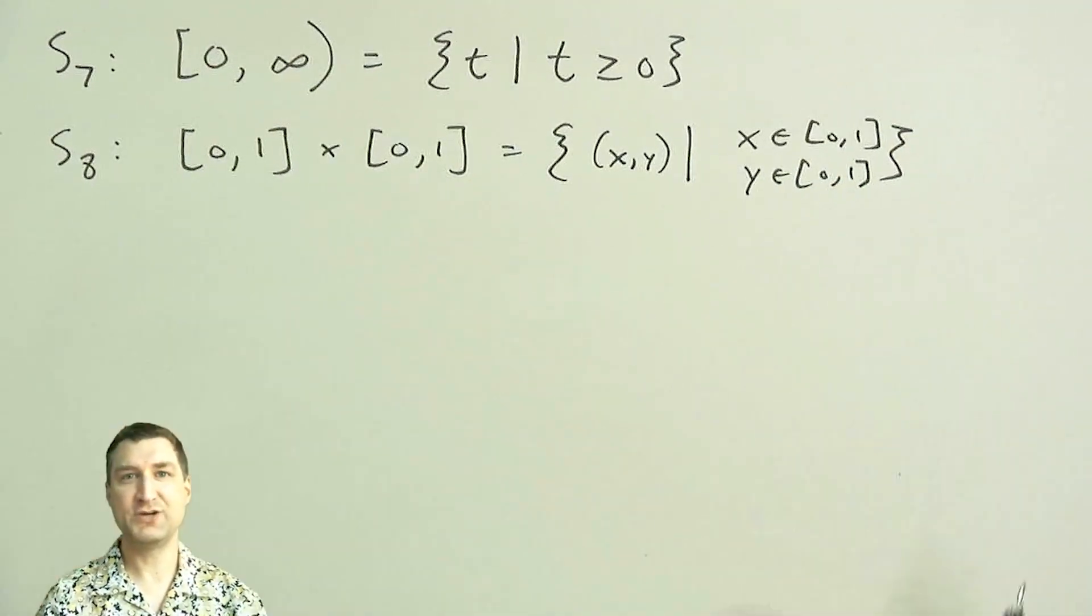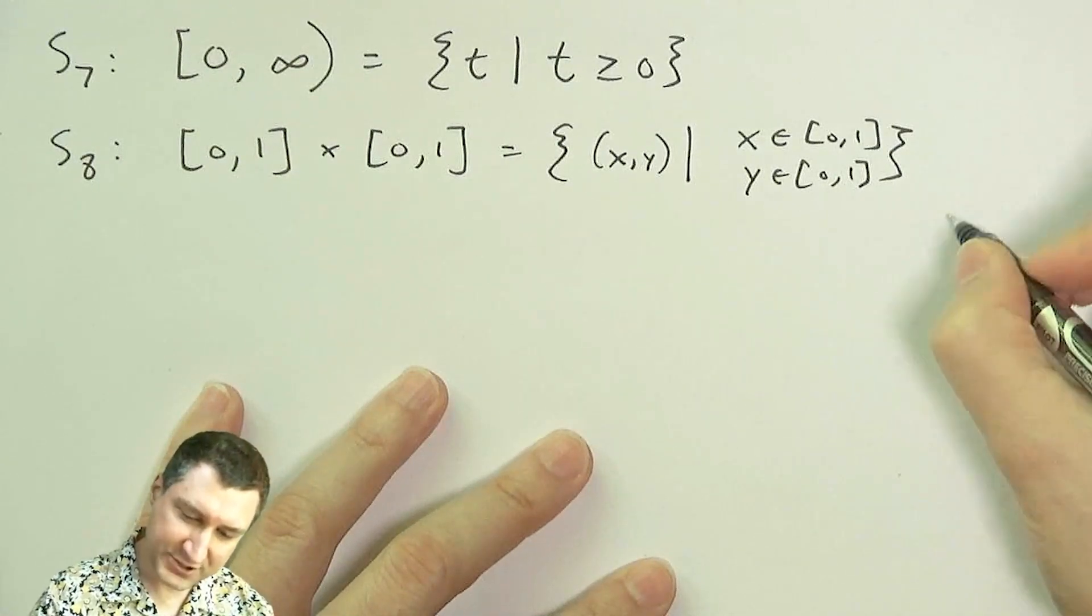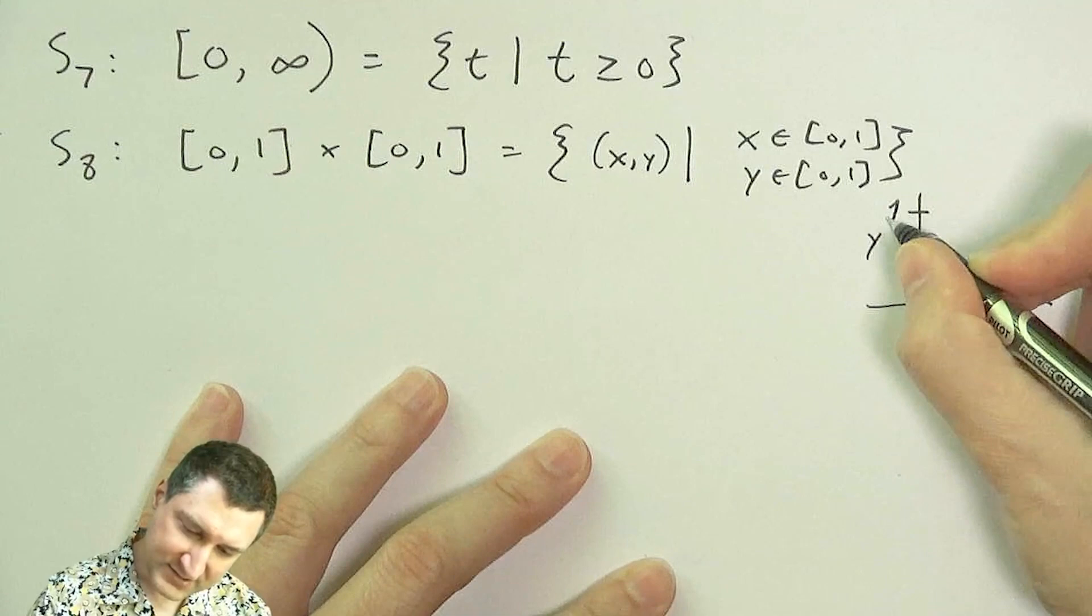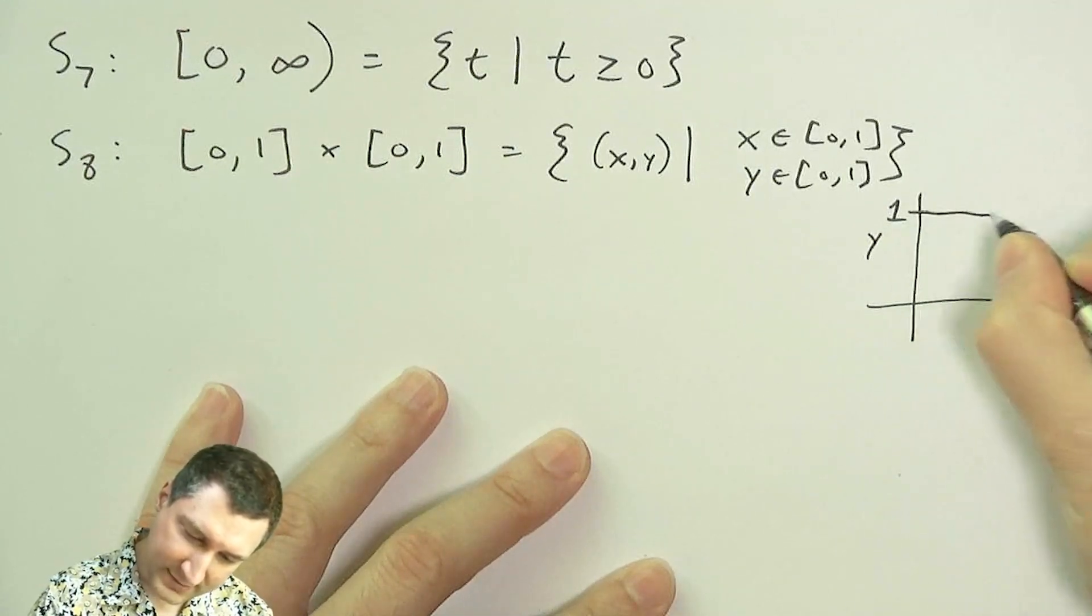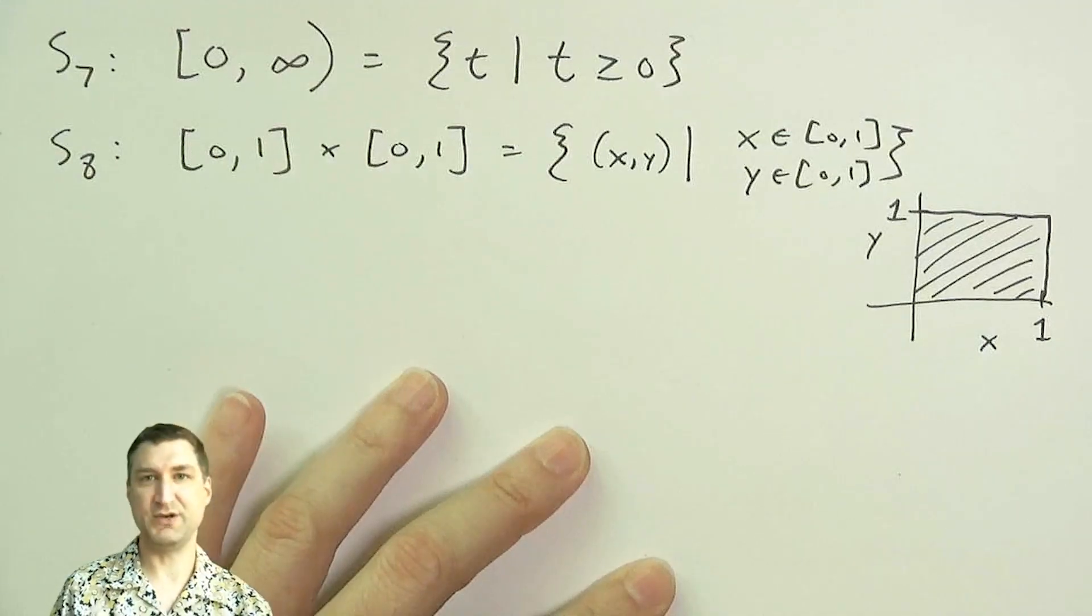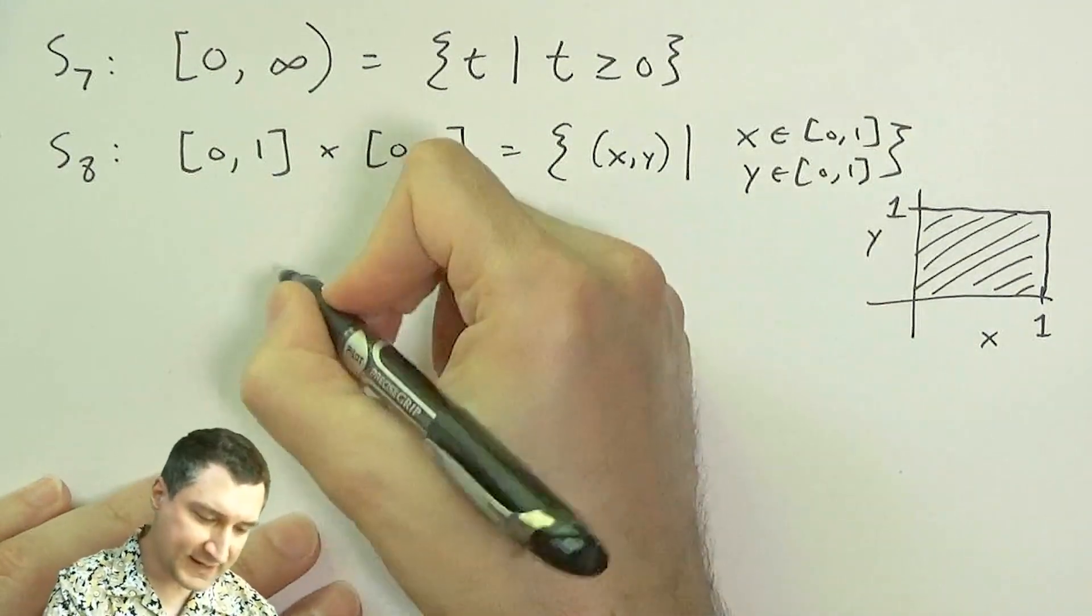And actually, when I'm talking about continuous sample spaces, I can sometimes draw a picture, right? So here I could say I have the x and the y, this is one, this is one, and this box is the sample space that I could have for that experiment.